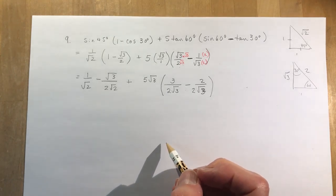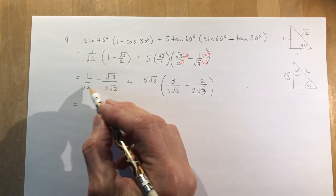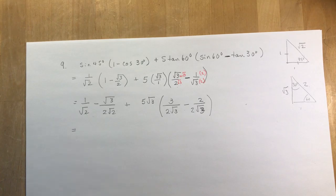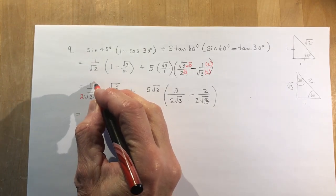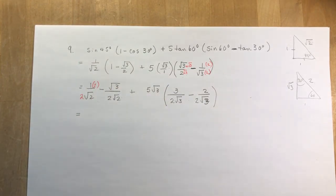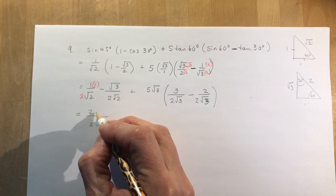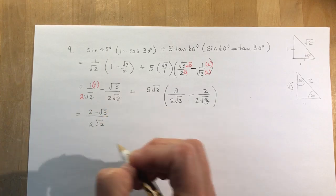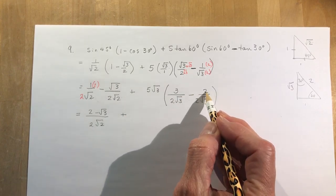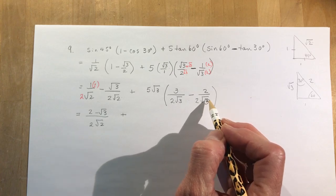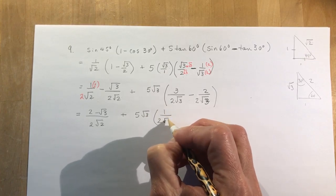Okay, so now that I've done that, if I'm going to subtract these two, I need a common denominator as well. So I have root 2 on this side, and 2 root 2 here, so I need to make this times 2, so we have the same denominator. So I have 2 root 2 in the denominator, and in the top, I have 2 minus root 3 over 2 root 2. Okay, now over here, I've got 3 over 2 root 3 minus 2 over 2 root 3. That would be 1 over 2 root 3, right? So I have 5 root 3 times 1 over 2 root 3.